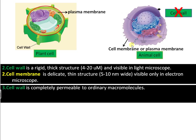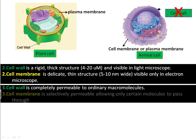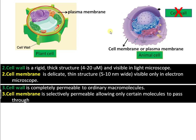Cell wall is completely permeable to ordinary molecules; its actual function is protection. Whereas plasma membrane, or cell membrane, is selectively permeable, allowing only certain molecules to enter into the cell and preventing all others from entry. There are a number of receptors on the surface of the cell membrane that communicate with the outside part of the cell.